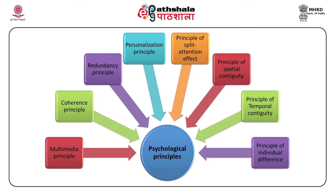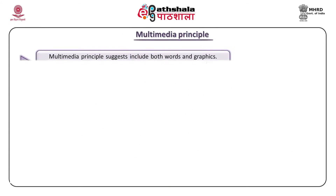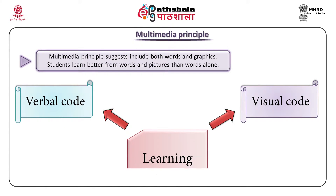When words and pictures are both presented, learners have the opportunity to construct verbal and visual mental images and build connections between the two. Learning occurs by encoding new information in long-term memory. According to dual encoding theory, content communicated with text and graphics sends two codes — verbal and visual — giving two opportunities for encoding into long-term memory, resulting in higher retention. Graphics can boost learning; however, it is important to select an appropriate graphic that supports the text and the learning goal.